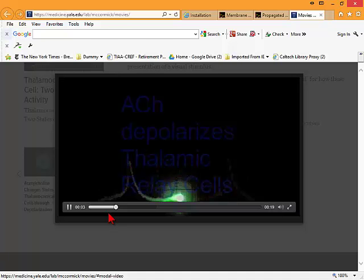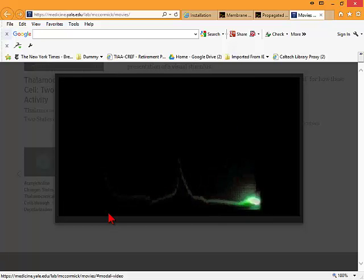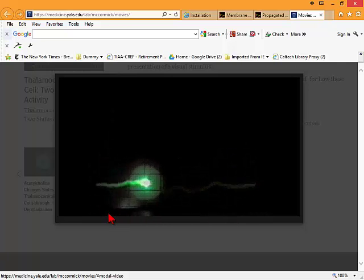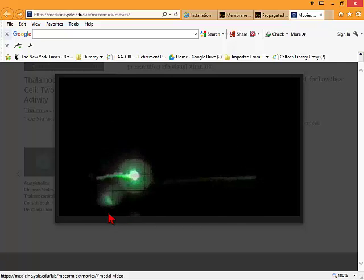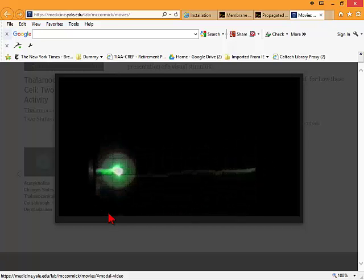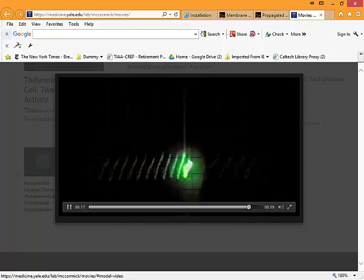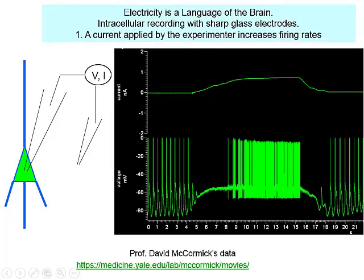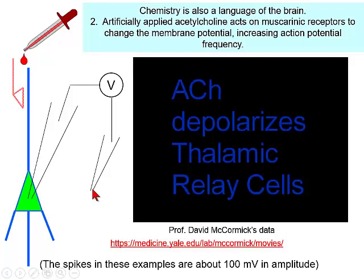Let's look at this recording. So now we have a sharp electrode inside the cell. We're recording the difference between the inside and the outside of the cell. But here, instead of applying current, we are applying a neurotransmitter, acetylcholine — that's ACh. And the cell seems to be responding to acetylcholine.